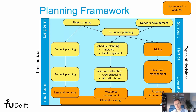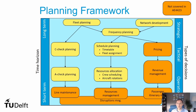We can divide this framework into three levels: the strategic, the tactical and operational, or if you want, the long-term, the medium-term, or the short-term horizon. In the strategic level, we define the fleet that the airline is going to operate — that's the fleet planning — and the network that they will operate in the future, that's the network development. If you combine both, you will end up estimating the frequency that you're going to have in each route, and this is the frequency planning.